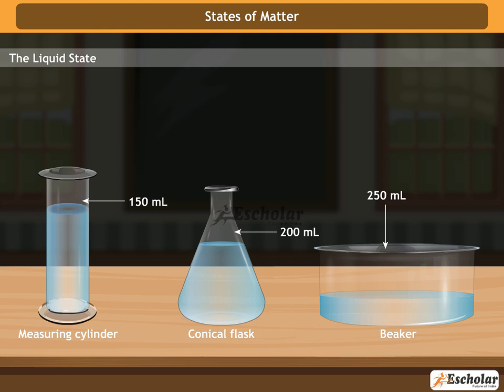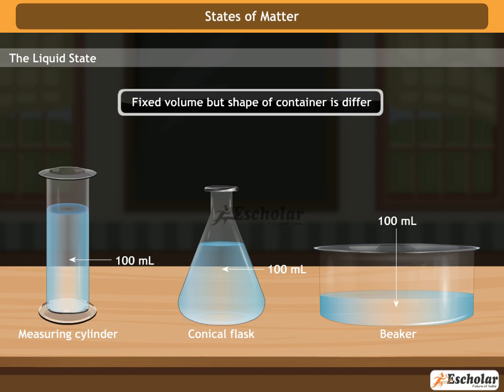We observe that the level of water in the containers differs, but the amount of water is the same in all containers. We conclude that liquids have a fixed volume but the shape is not fixed — they acquire the shape according to the shape of the container.